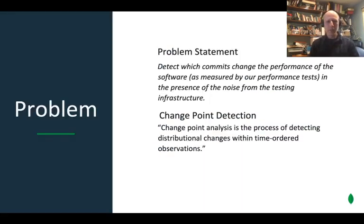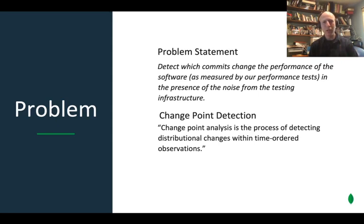So we used this as a time to take a step back and reevaluate what we're really trying to do. What we're not trying to do is tell if performance changed more than 10% — that's what we were doing, but it's not the goal. The goal really is to know when it changed and how much. We formalized our problem as: detect which commits changed the performance of software, in the presence of noise. And when you get down to it, that's a change point detection problem. Here's the definition as taken from a paper we used: it's the process of detecting distributional changes within time-ordered observations — that's exactly what we have.